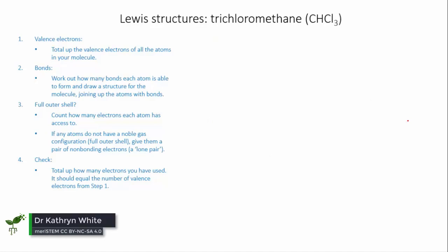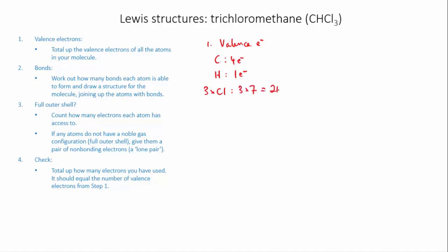Let's try trichloromethane, CHCl3. So first, valence electrons. Carbon has 4, hydrogen has 1, and I have 3 chlorines, each of which has 7, which equals 21. When I total those up, I've got 21 plus 5, which is 26 valence electrons to play with.